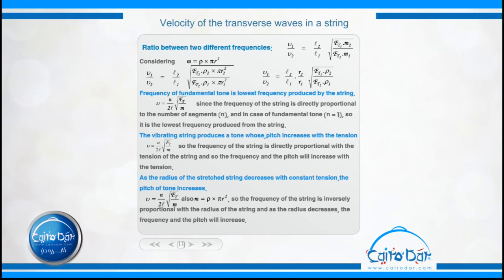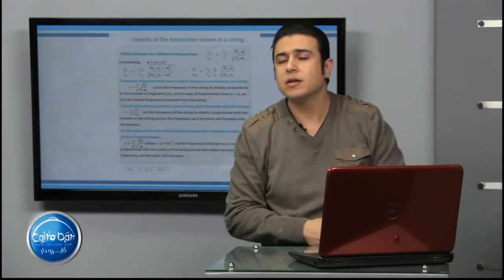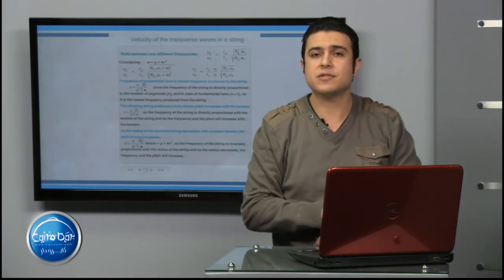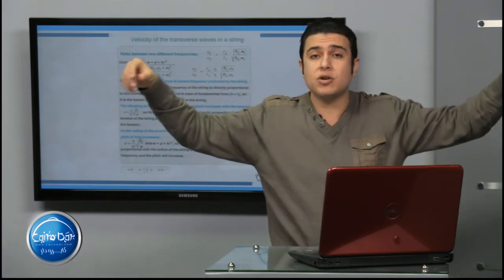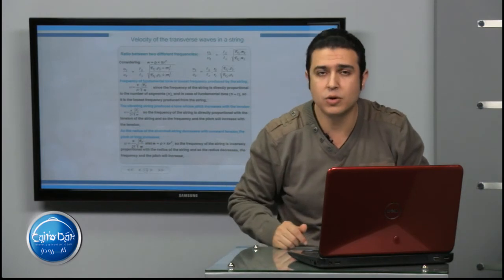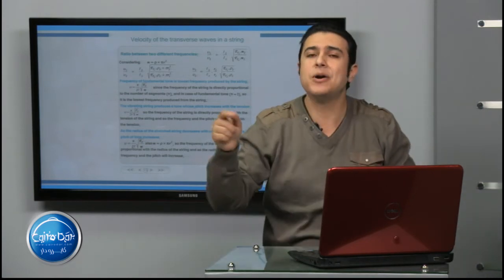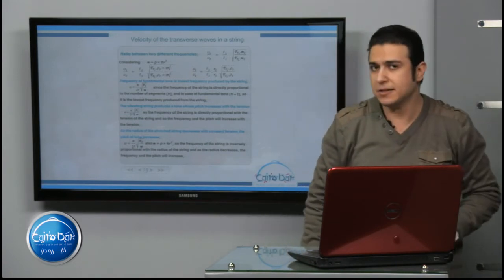The mass per unit length can be calculated using three methods. The first method: mass per unit length equals the total mass of the string divided by the total length of the string. For example, if the mass of the string equals 0.005 kg and the length is 1 meter, then the mass per unit length equals 0.005 / 1 = 0.005 kg/m.